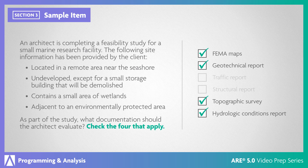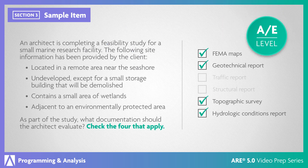The correct answers are FEMA maps, geotechnical report, topographic survey, and hydraulic conditions report. According to the Site Planning and Design Handbook, evaluating these documents is critical in understanding the site's potential for coastal flooding, the makeup and stability of the soils, potential earthwork requirements, and how the presence of water and wetlands may impact development. Since this is an undeveloped and remote site, a traffic report and structural report would not be necessary for this feasibility study. This is an AE level item requiring you to analyze the site information provided and determine what documentation should be evaluated to assess the feasibility of the project.